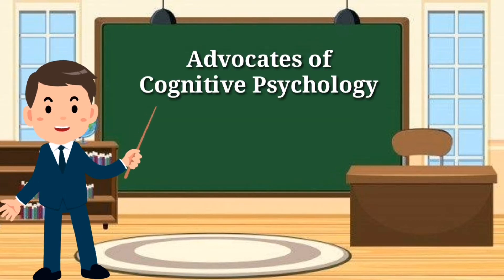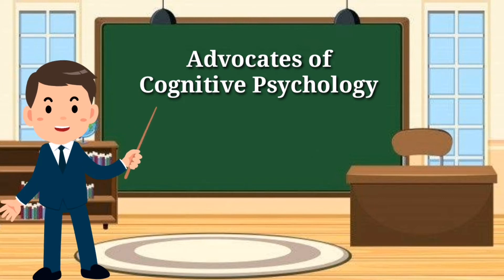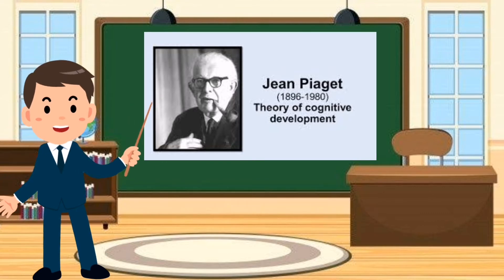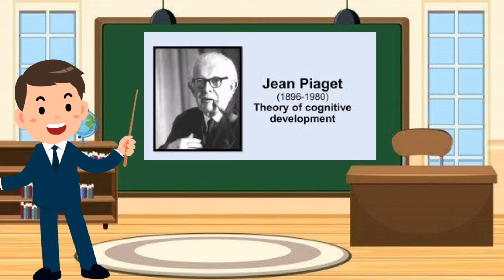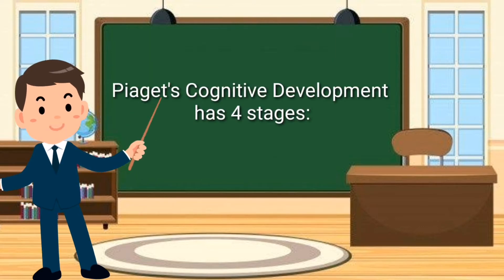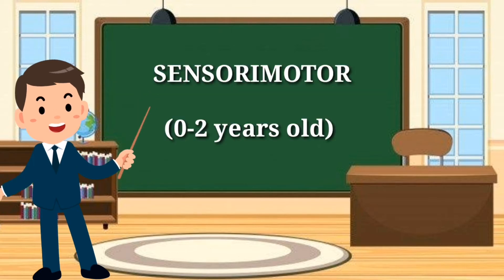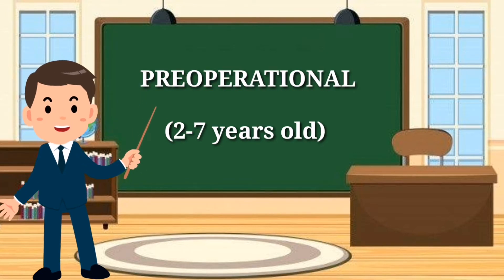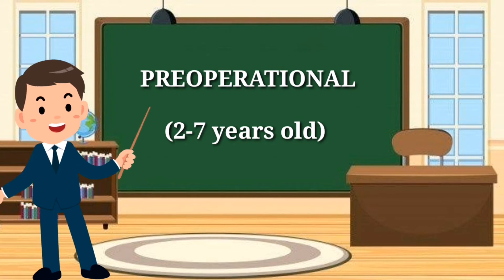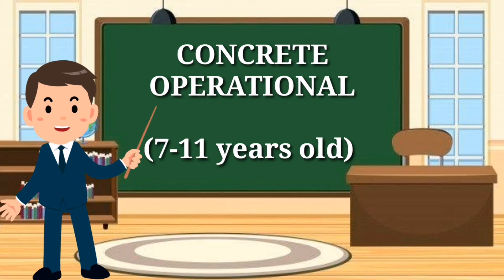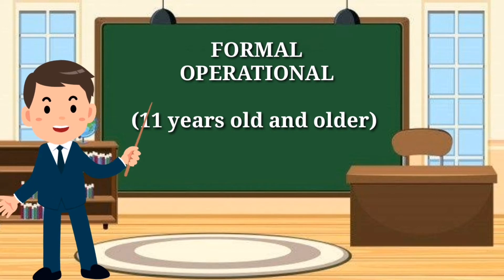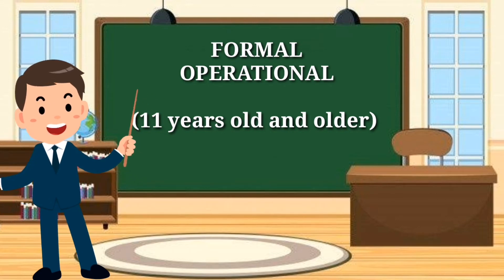There are many advocates of cognitive psychology. Let's start with Jean Piaget, who introduced the theory of cognitive development. Piaget's cognitive development has four stages: the sensorimotor stage, ages zero to two years old; the pre-operational stage, two to seven years old; the concrete operational stage, seven to eleven years old; and the formal operational stage, eleven years old and older.